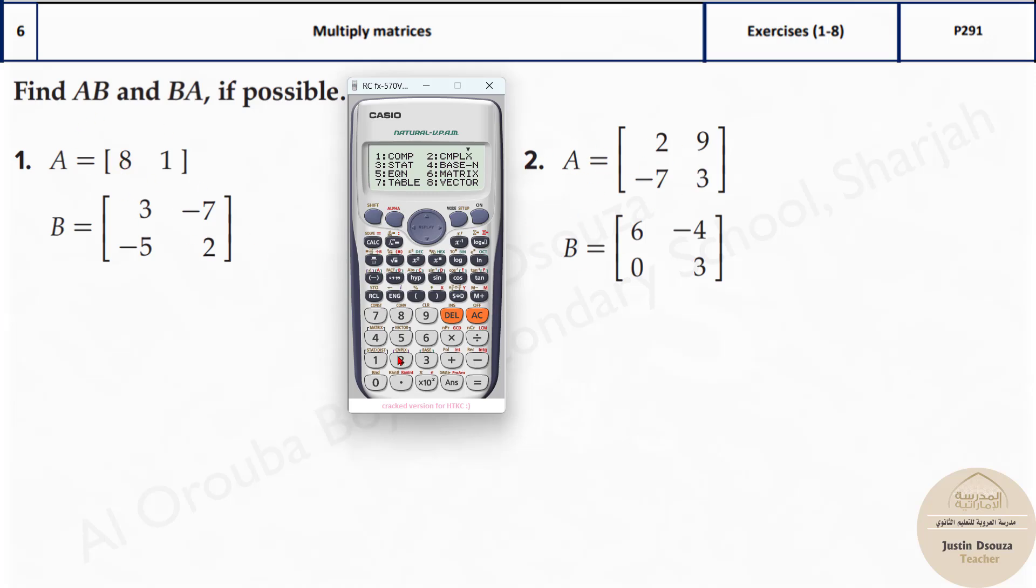Let's do this A, that is matrix A. First mode and 6 is the matrix option. Matrix A, it's 2 cross 2, so I'll press 5 and now type in the matrix: 2, 9, minus 7, and 3. Now press AC. Never go back to mode again. You need to press shift 4 to use matrix options.